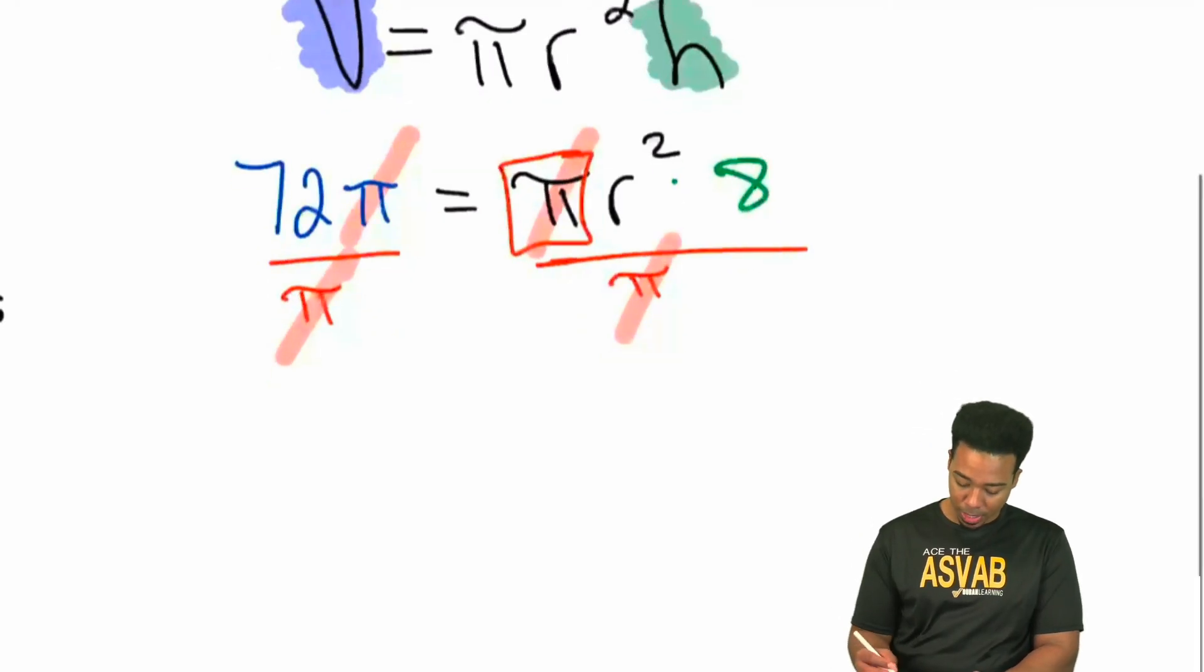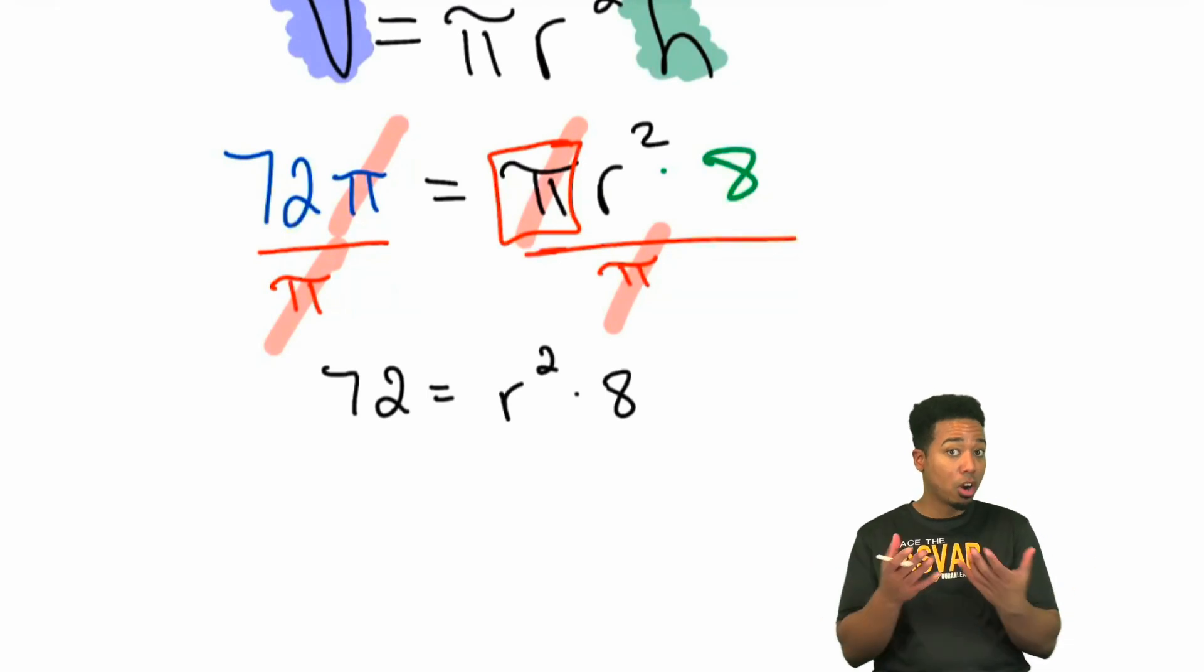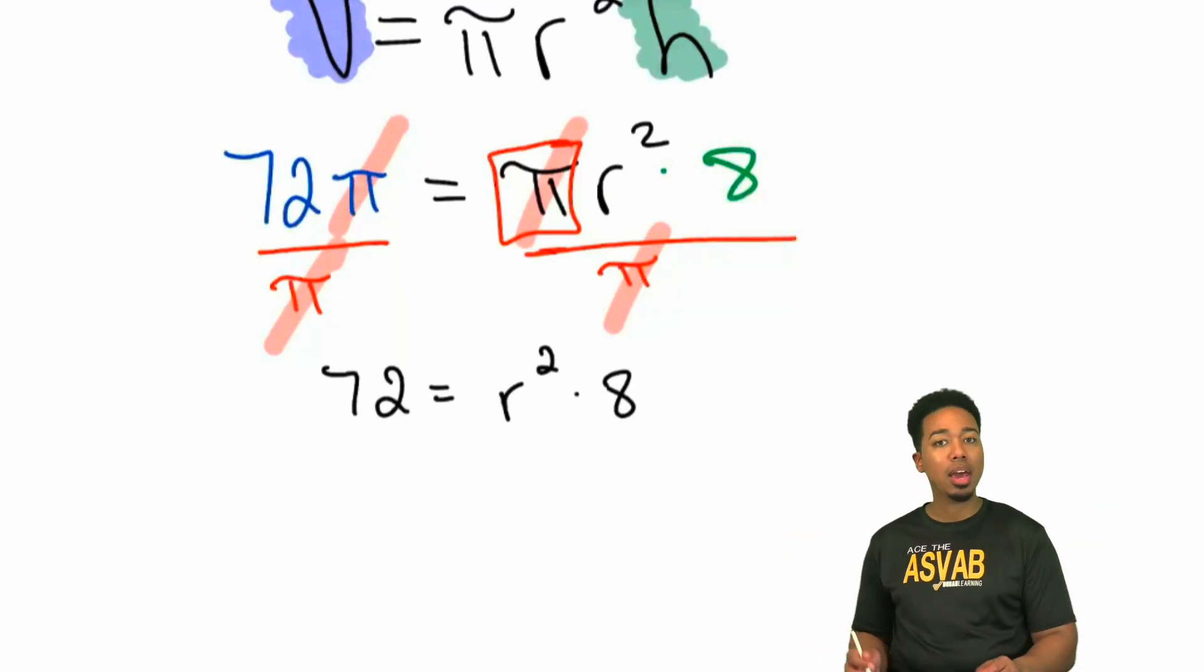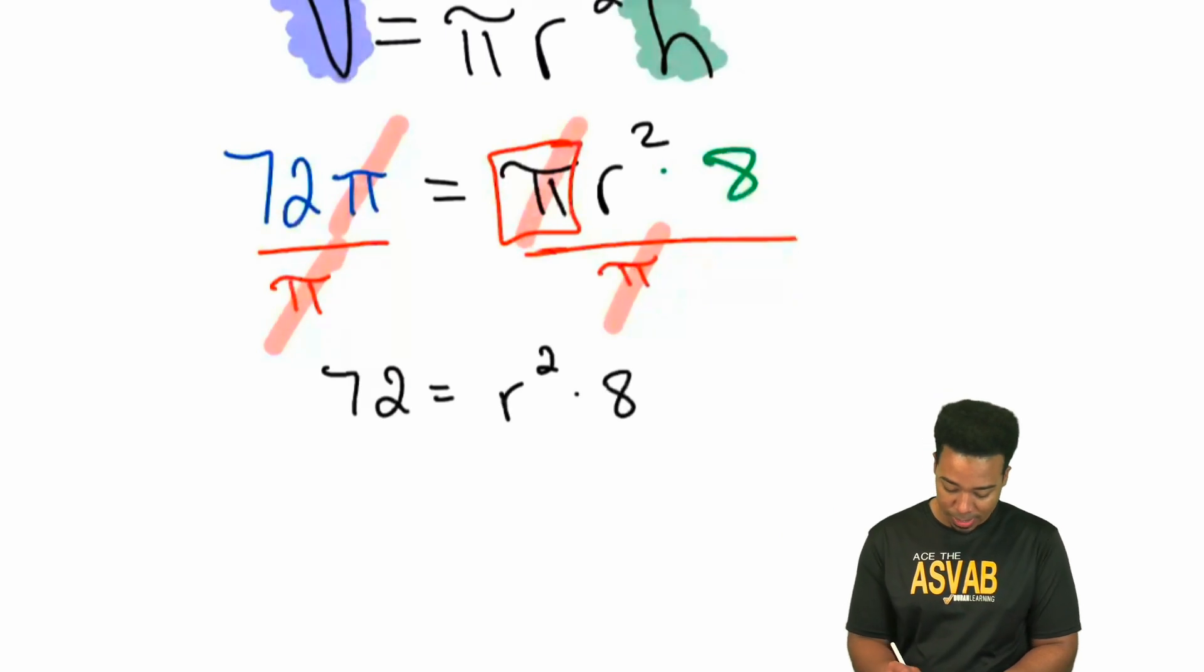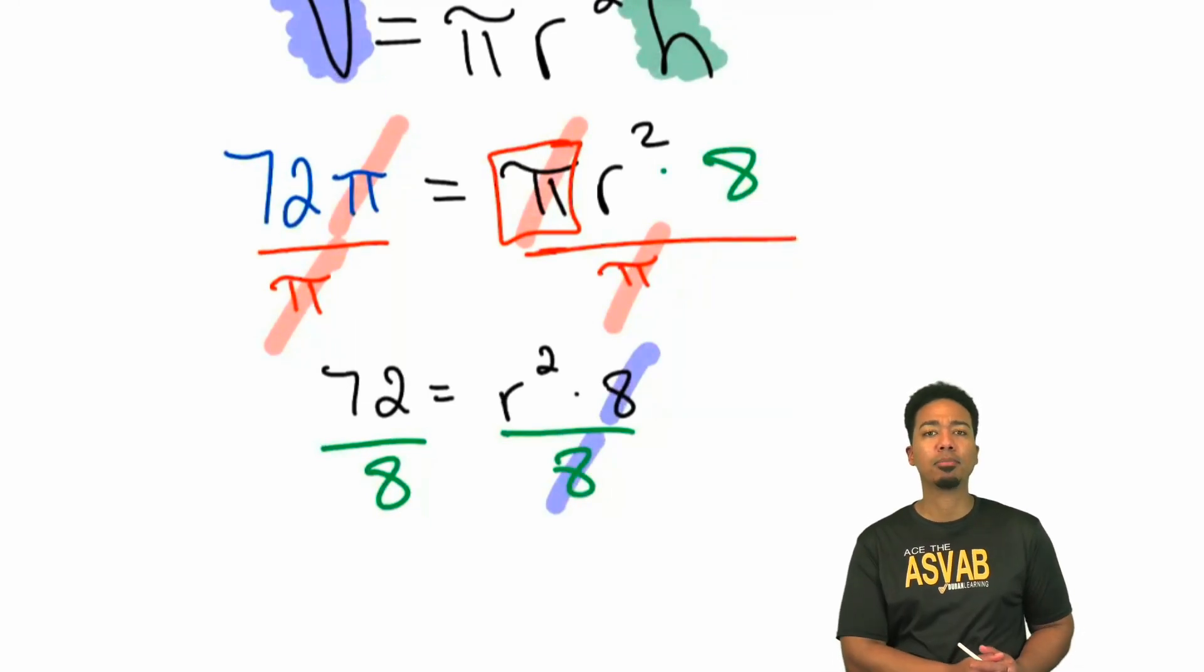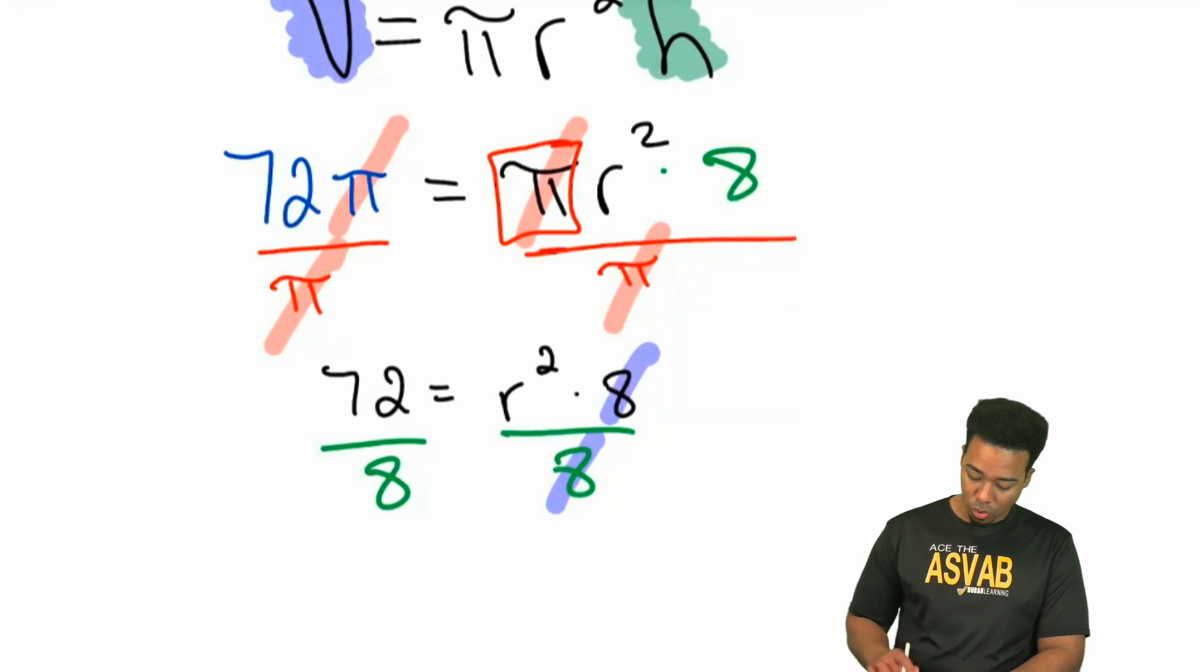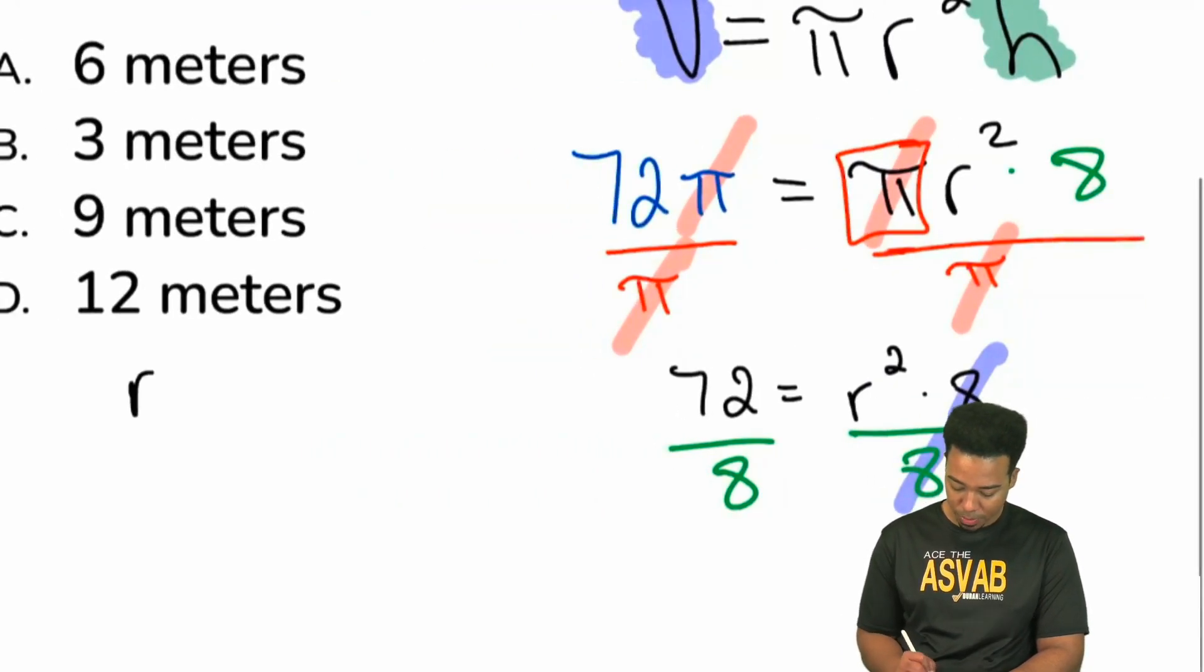So what we have now is 72 equals r squared times 8. If we're multiplying by 8 and we're trying to get to the r, we're trying to work backwards, let's go ahead and divide 8 from both sides. When we divide 8 from both sides, it's going to cancel out on the right side. Everybody, 72 divided by 8 gives us what? That's going to give us 9. When we solve this, we're going to go ahead and just continue on over here. We have 9 equals r squared.